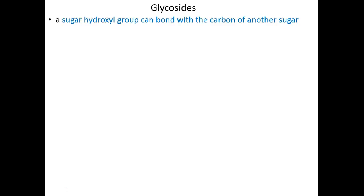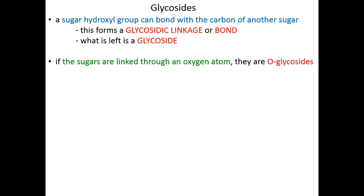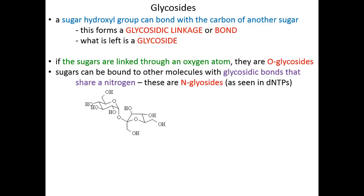On to glycosides. We've talked about glycosidic linkages already, but let's put some more meat on those bones. We can not only make glycosidic bonds with amines and alcohols — we can actually make glycosidic bonds with other sugars. Through the hydroxyl group of one sugar we can make a bond with a carbon of a neighboring sugar; that would be a glycosidic linkage, and what we will have is a glycoside. If those two sugars are bridged to one another through an oxygen, we have an O-glycoside. Here's an example of two sugars linked together through an oxygen atom — that linkage is a glycosidic linkage, making it an O-glycoside.